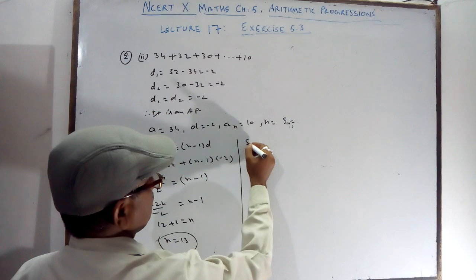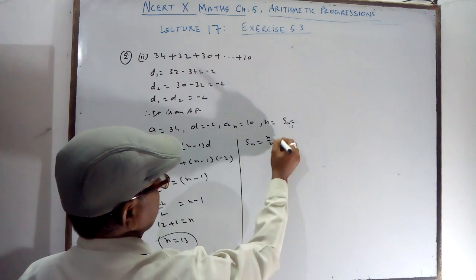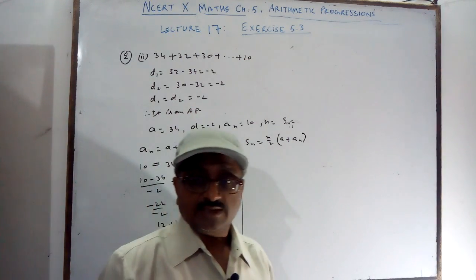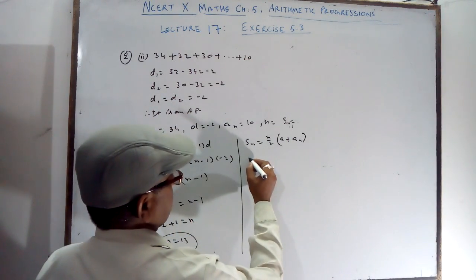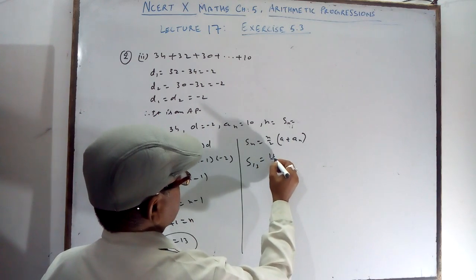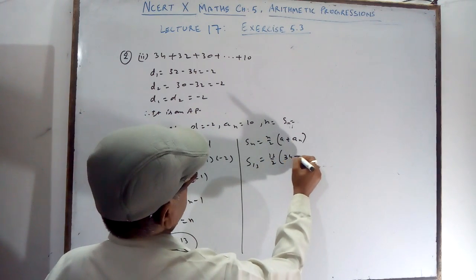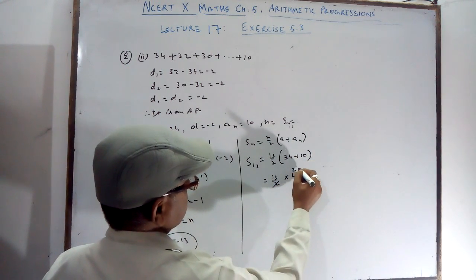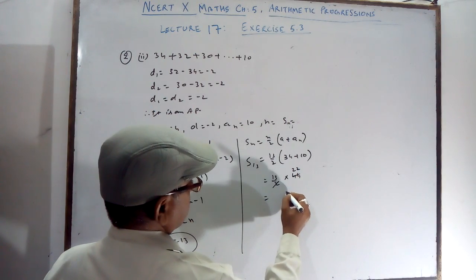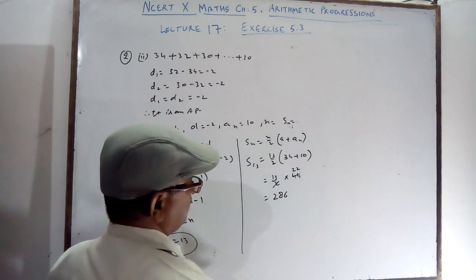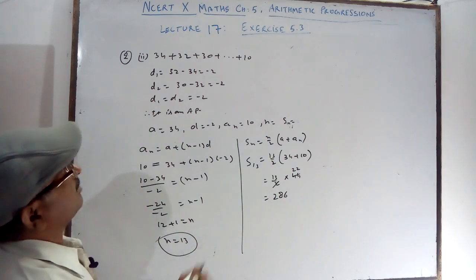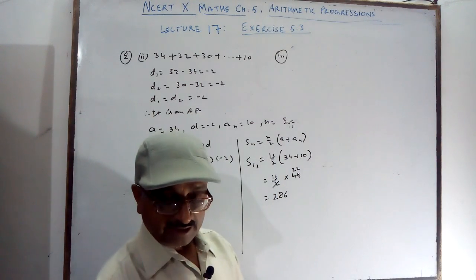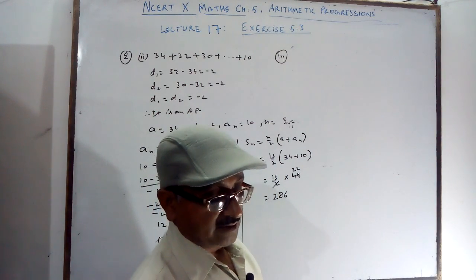For Sn, apply the formula Sn equals N by 2 into (2A plus (N minus 1) into D), or equivalently N by 2 into (A plus AN). So S13 equals 13 by 2 into (34 plus 10) equals 13 by 2 into 44 equals 13 into 22 equals 286. The sum is 286.